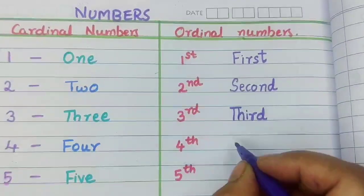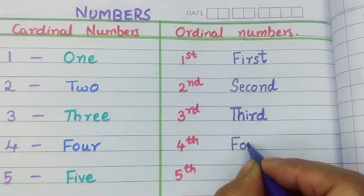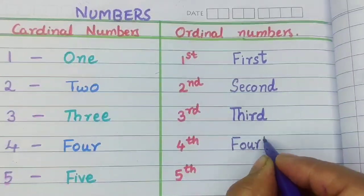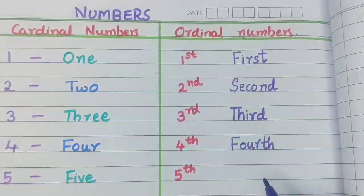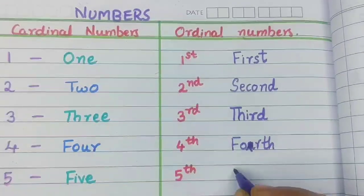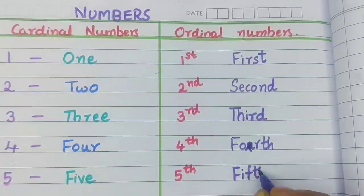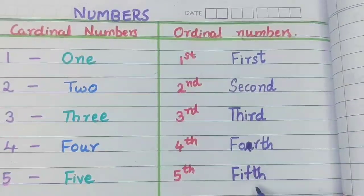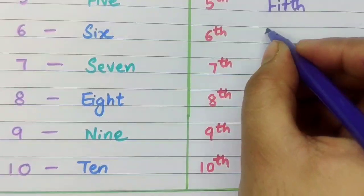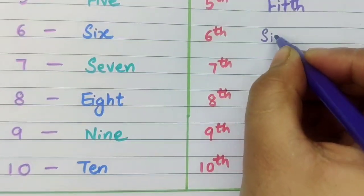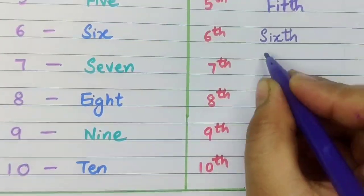Fourth is written as F, O, U, R, T, H — fourth. Fifth is written as F, I, F, T, H — fifth. Sixth is written as S, I, X, T, H — sixth.